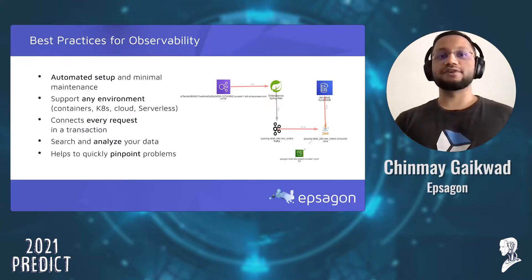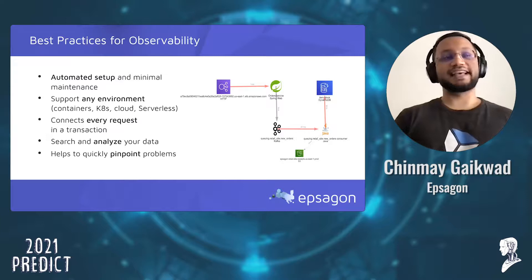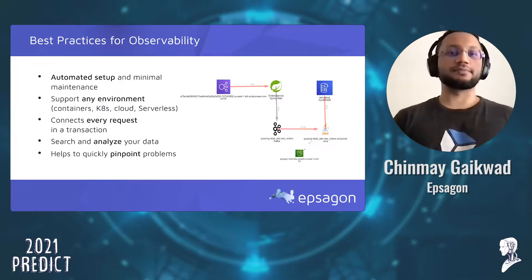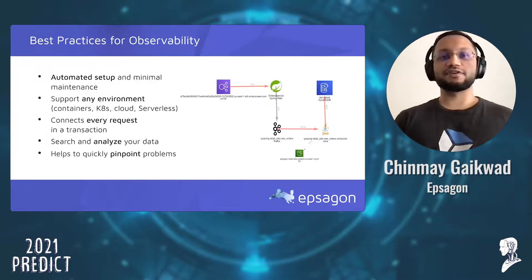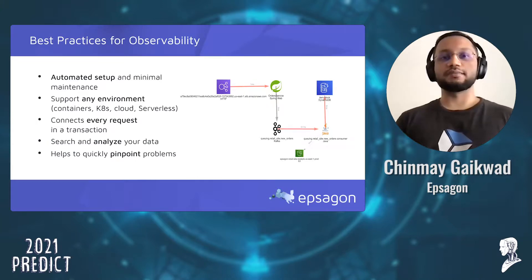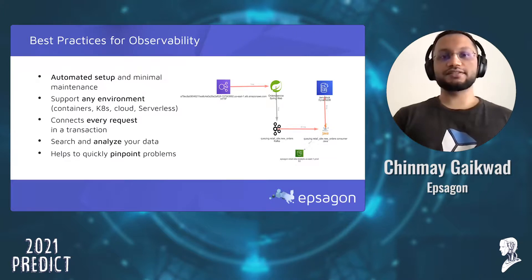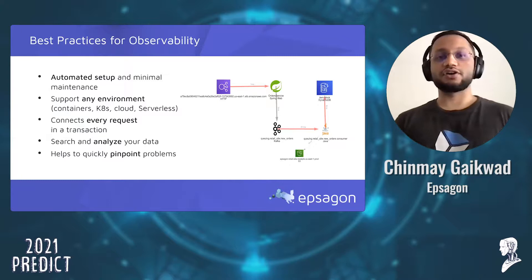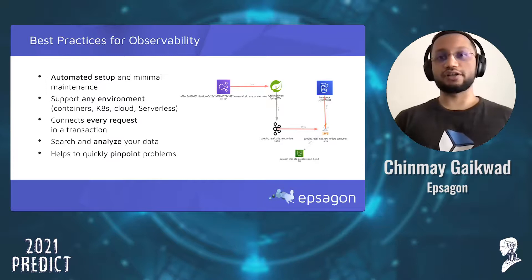Observability should be top of mind for every organization, and it shouldn't come at the expense of business or developer velocity. Epsagon takes a fully automated approach to instrumentation with minimal maintenance requirements. Our agents can collect data from any component within your stack — whether it's a service running in a container, function as a service, or traditional VMs — without requiring separate agents. We do this with rich context across metrics, logs, and traces, and allow you to search full payloads or custom tags.